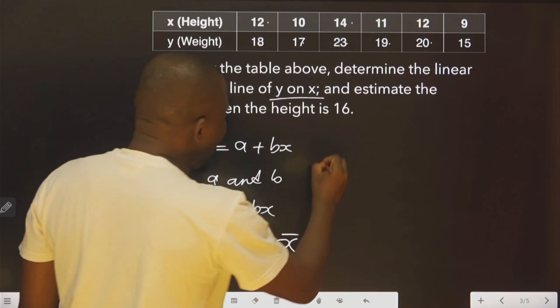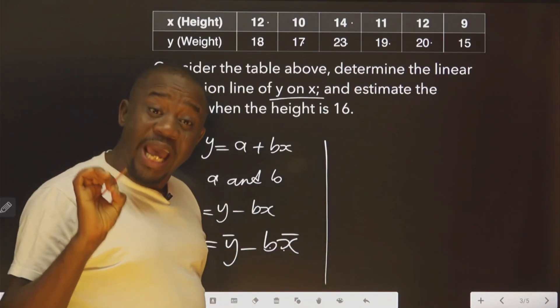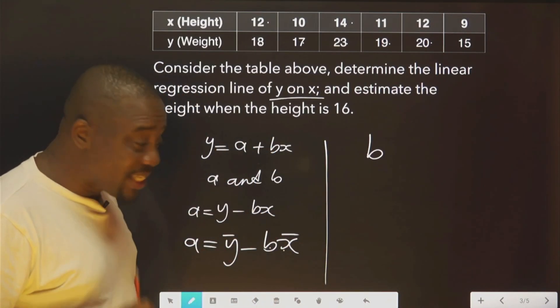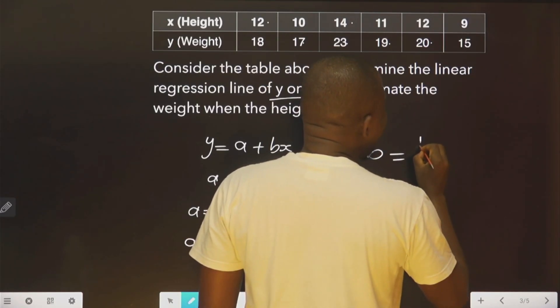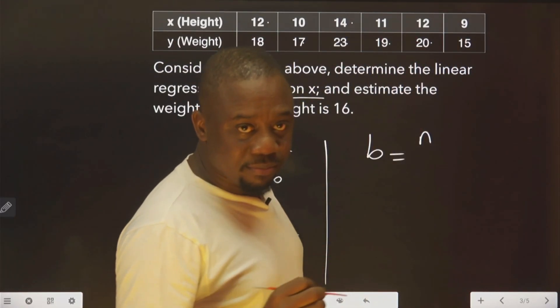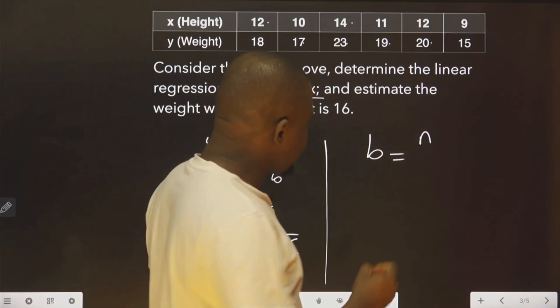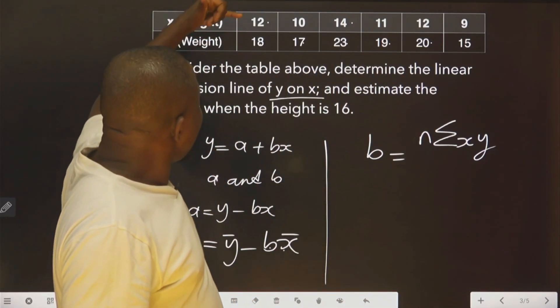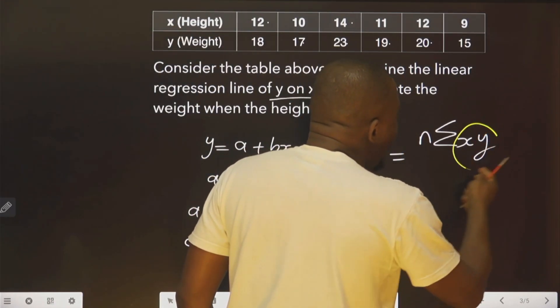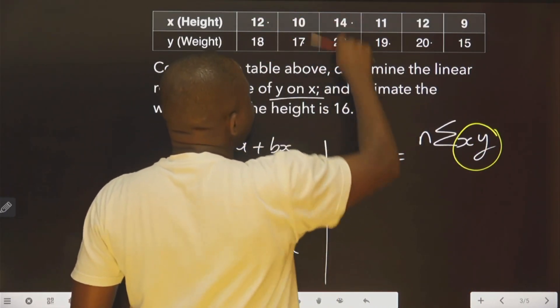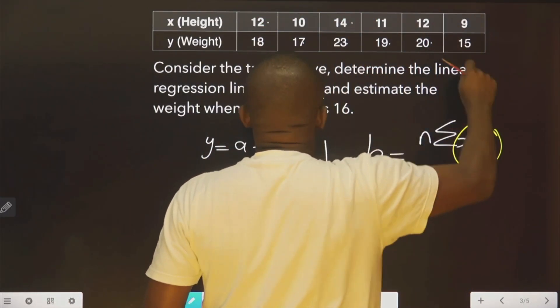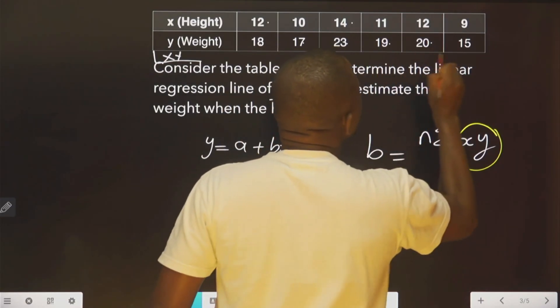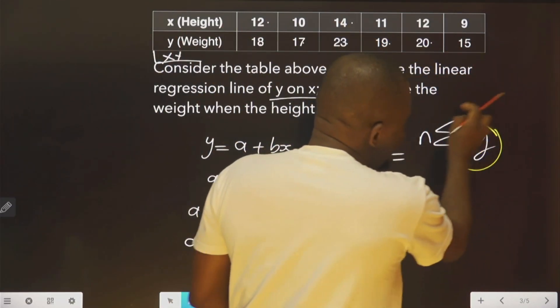Now, what is the formula to get b? The formula to get b is this. B, which is the coefficient of x, is equal to the number of items we are considering multiplied by the summation of x and y. That is, to get this now, it simply means, first of all, multiply each of these. Once you multiply them, you create a new line for them. That is, xy line. You multiply and put each value. Then you sum them together. That is the meaning of this. You sum them together.